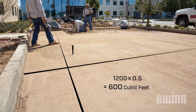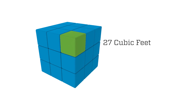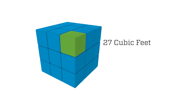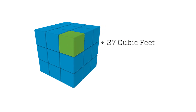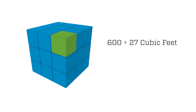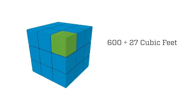But you need to order the material by the cubic yard. Remember, there are 27 cubic feet in a cubic yard. To make the conversion, divide 600 by 27. This will give you a final total of 22.2 cubic yards of material needed for the job.